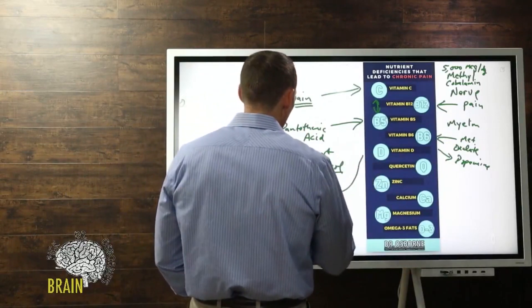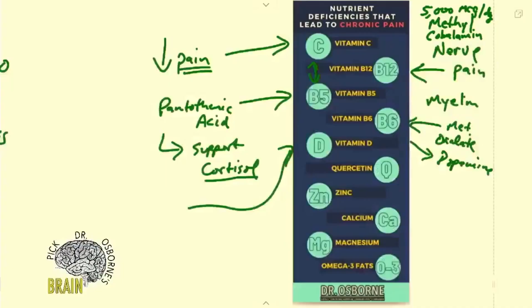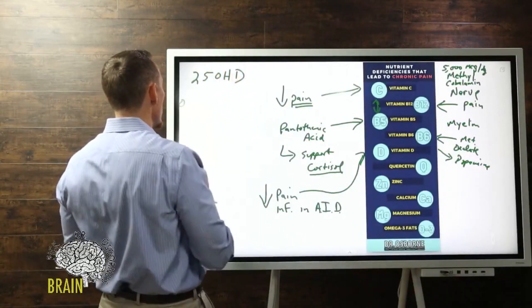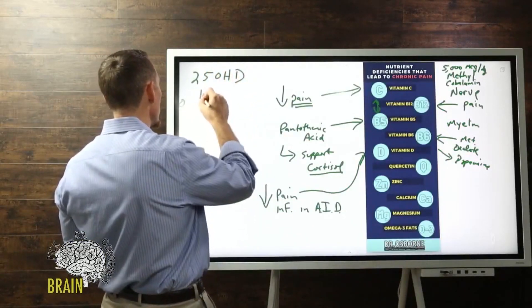Vitamin D—there's a lot of research on vitamin D actually reducing pain and reducing inflammation in autoimmune disease, especially rheumatoid arthritis. This is a real easy test to ask your doctor to measure—ask them to measure your 25-OH-D.